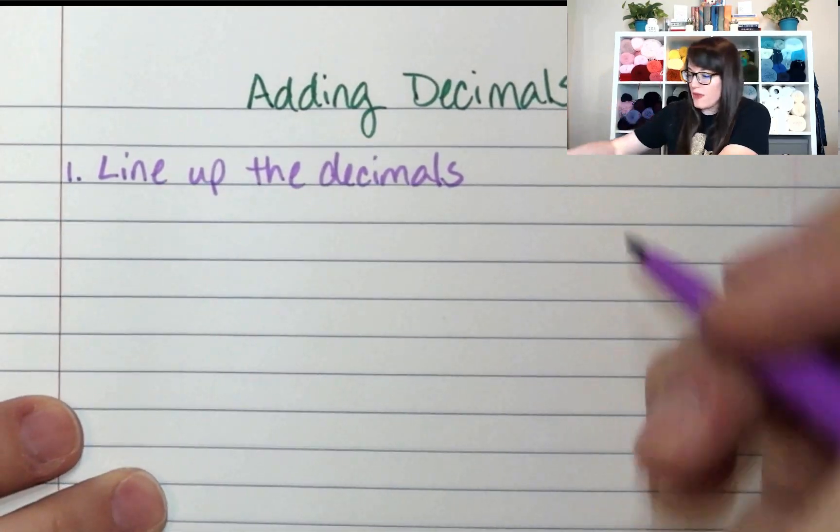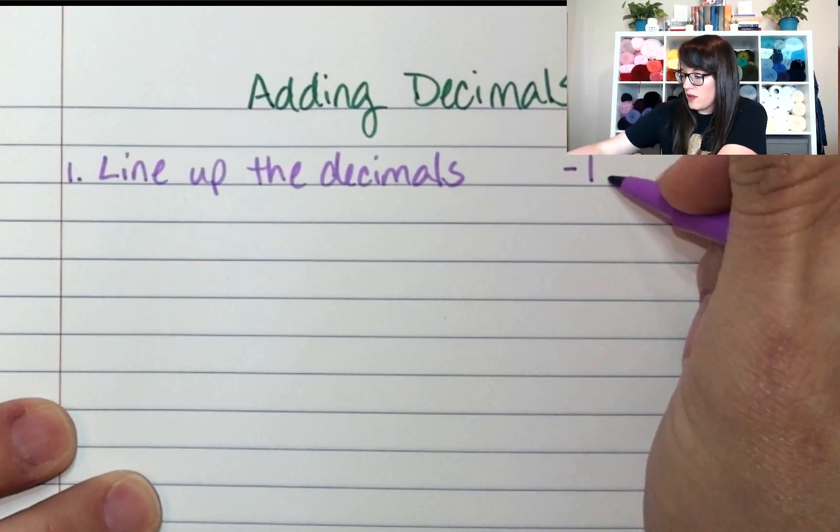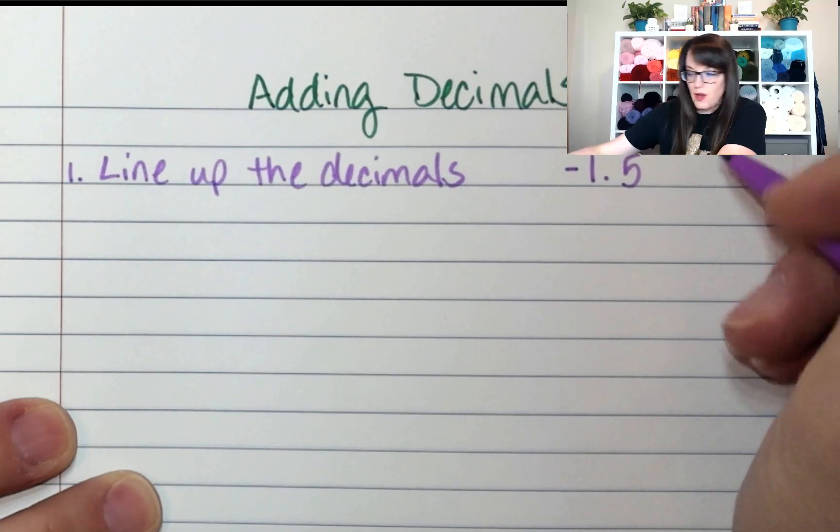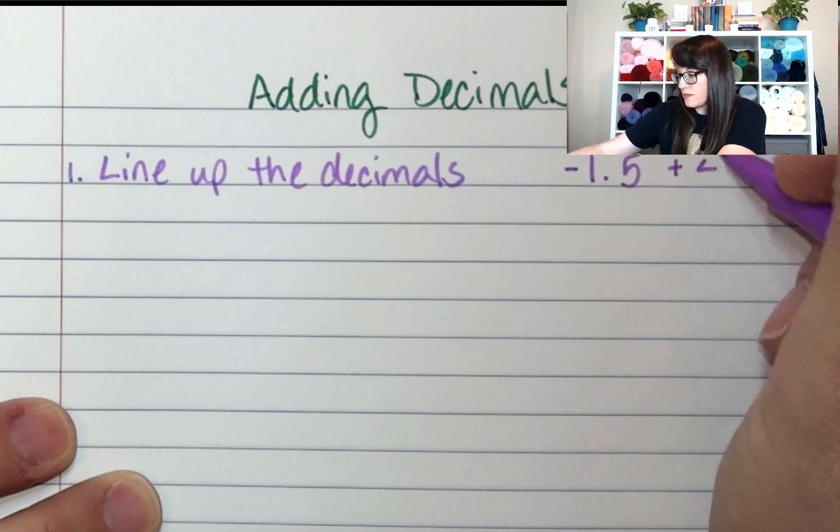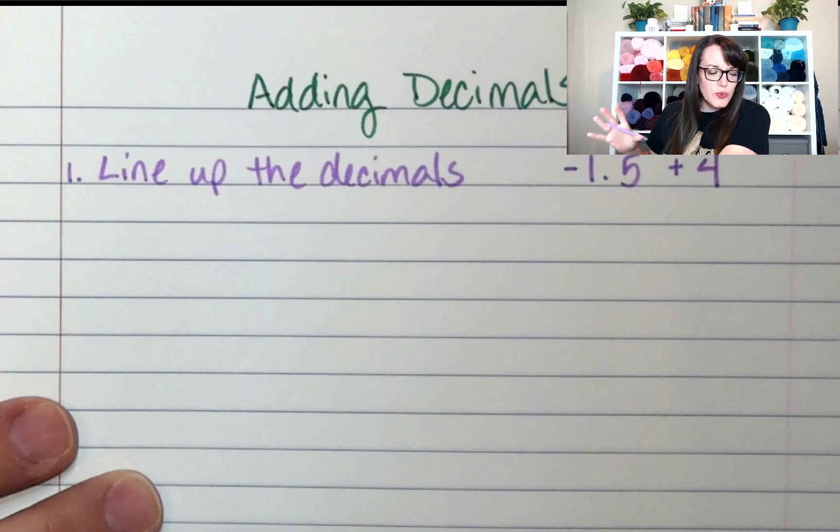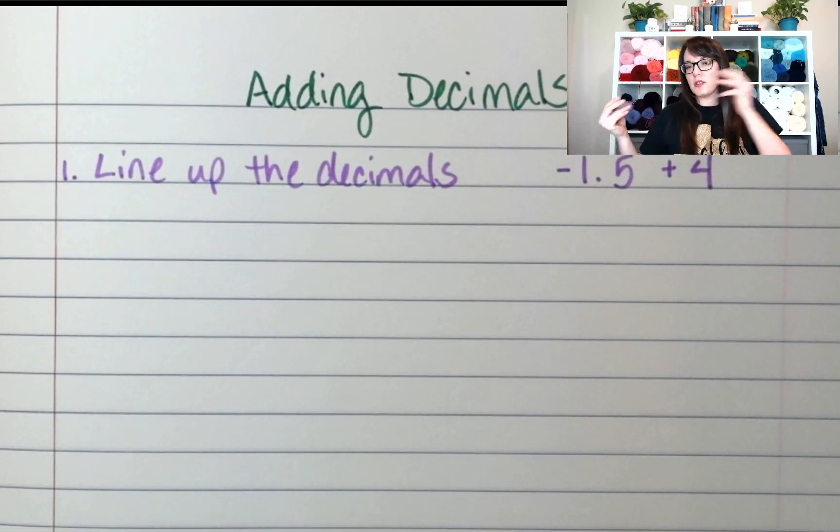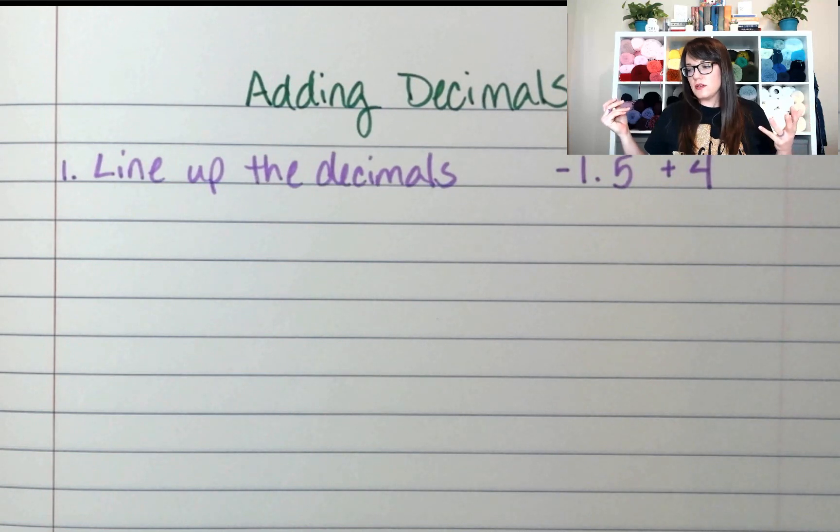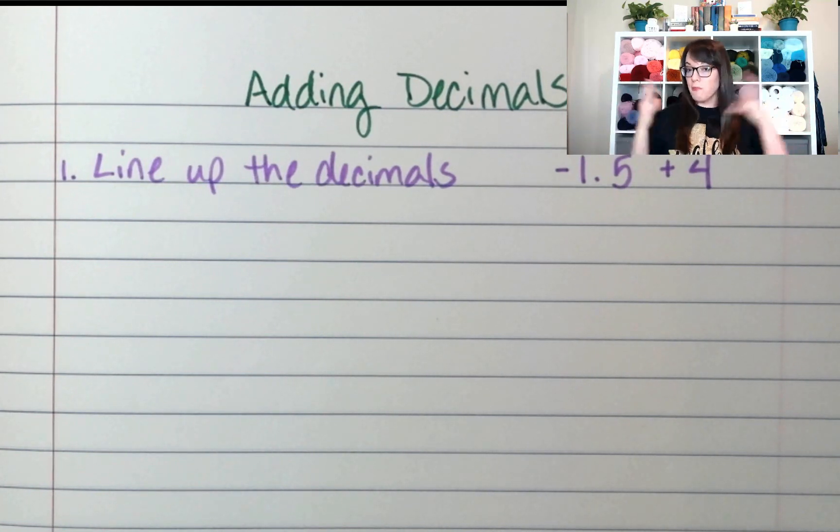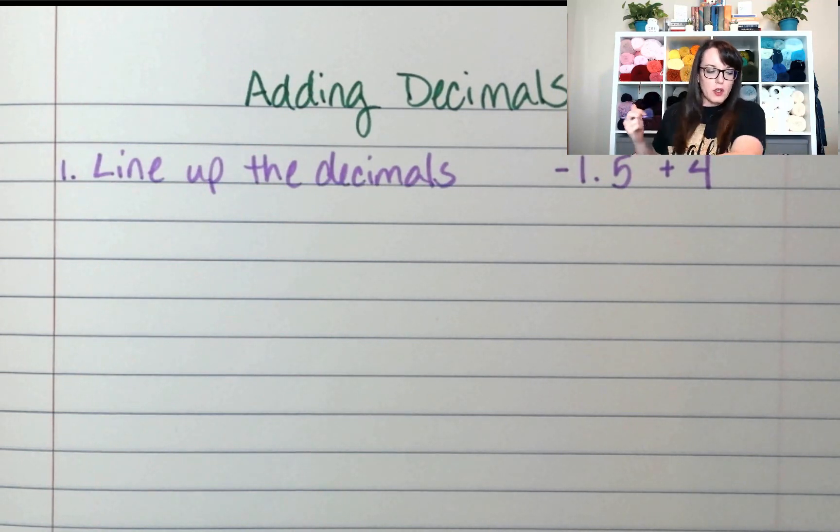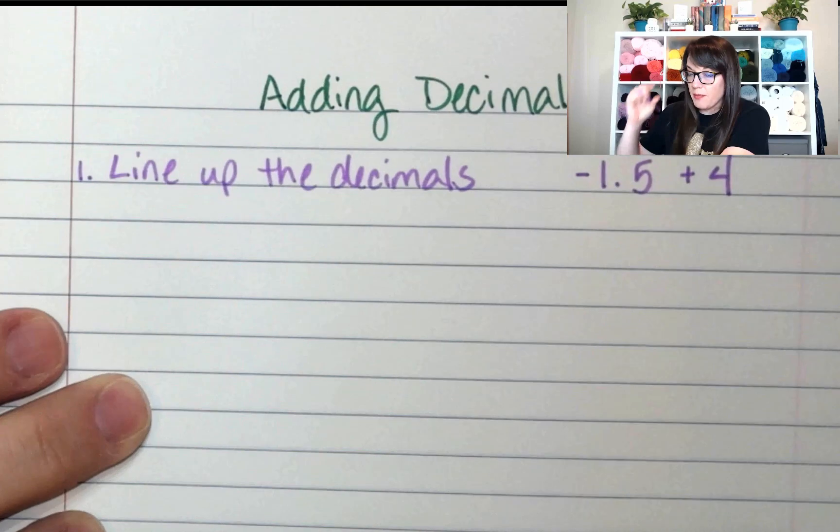So if we have the numbers negative 1.5 plus 4, which one is the bigger number? Is it my positives or is it my negatives? Well, in this instance, my positive 4 has more than my negative 1.5.